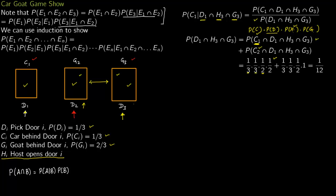For the second part — car behind door 2, contestant picks door 1: car is behind door 2 with probability one third, contestant picks door 1 with probability one third. Now the host has no choice but to open door 3 with probability one, since he cannot open door 1 (contestant's choice) or door 2 (car behind it). The probability of a goat behind door 3 is one half. Multiplying and adding both terms gives one twelfth for the denominator.